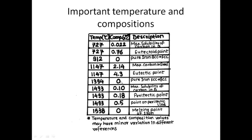At 0% carbon and 1394 degrees Celsius, again the allotropic change occurs in pure iron — it changes its crystal structure from FCC to BCC. At 1493 degrees Celsius, we have three compositions: 0.18 weight percentage carbon shows the peritectic reaction, and 0.10 weight percentage carbon gives the maximum solubility of carbon in delta ferrite.